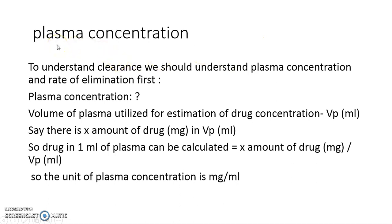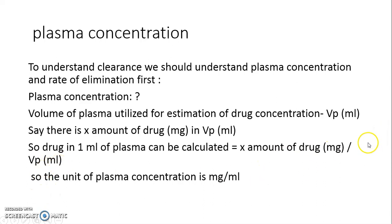To understand clearance, we need to understand plasma concentration and rate of elimination. Plasma concentration is the amount of drug in plasma. The volume of plasma used for estimation of drug concentration is Vp in milliliters. We can calculate how much drug is in one ml of plasma: it is X amount of drug divided by Vp ml of plasma, and the unit is mg per ml.